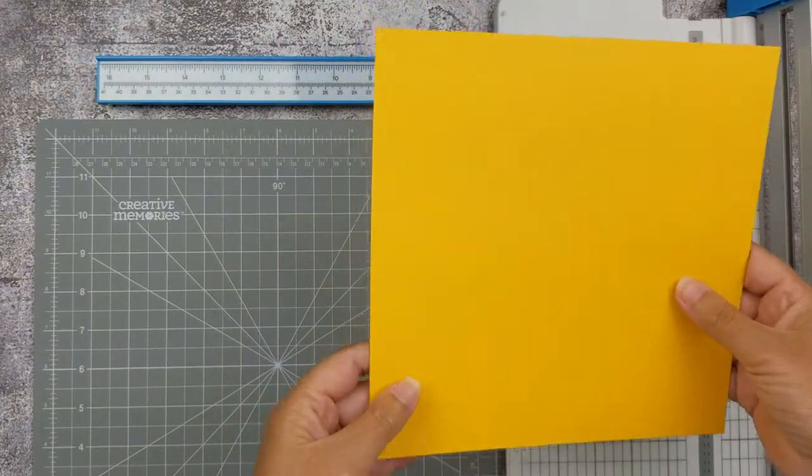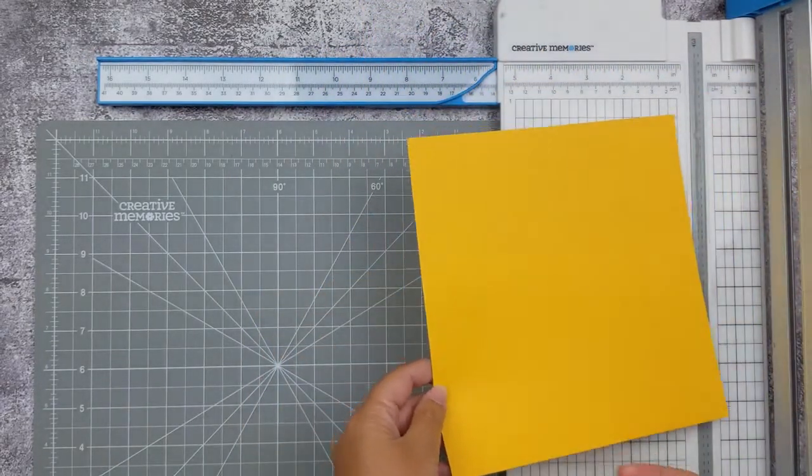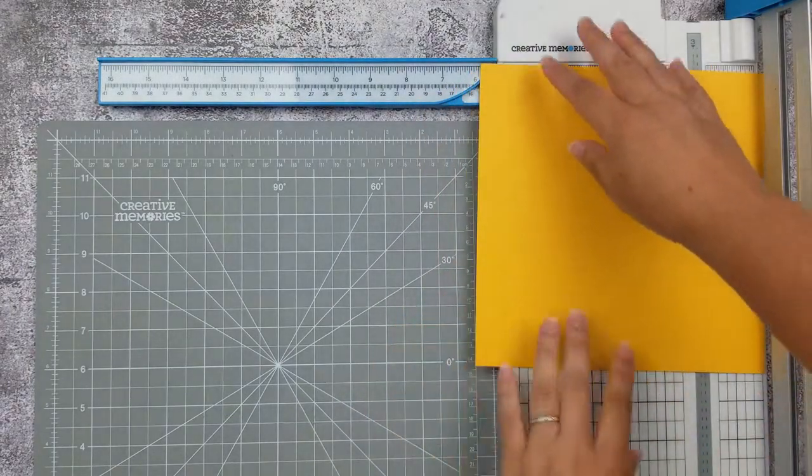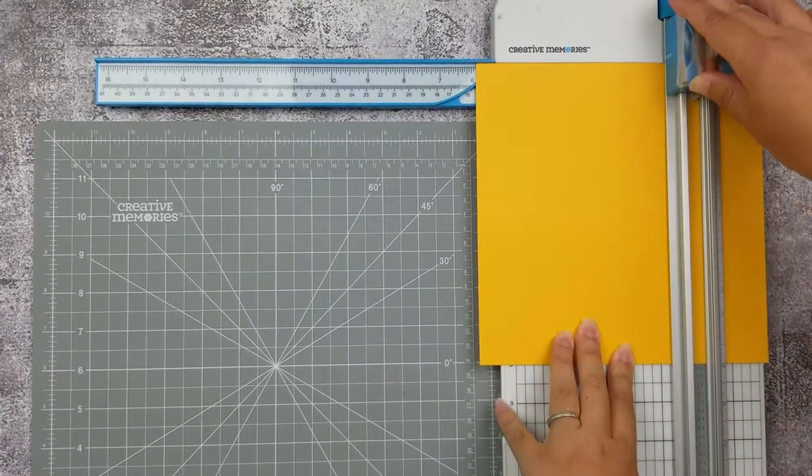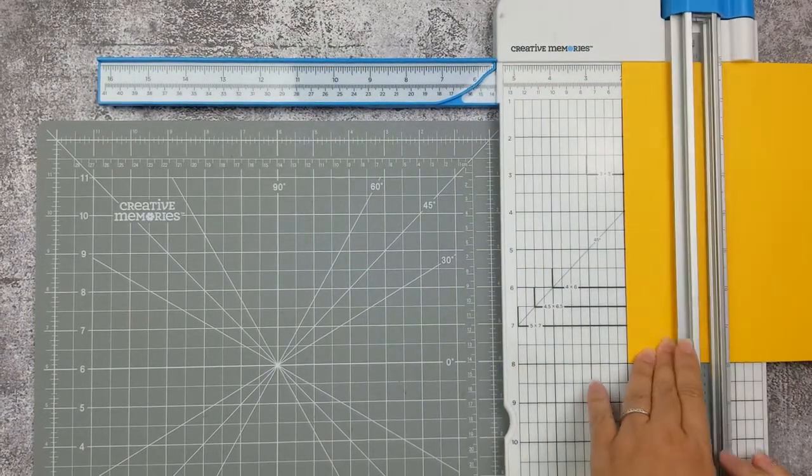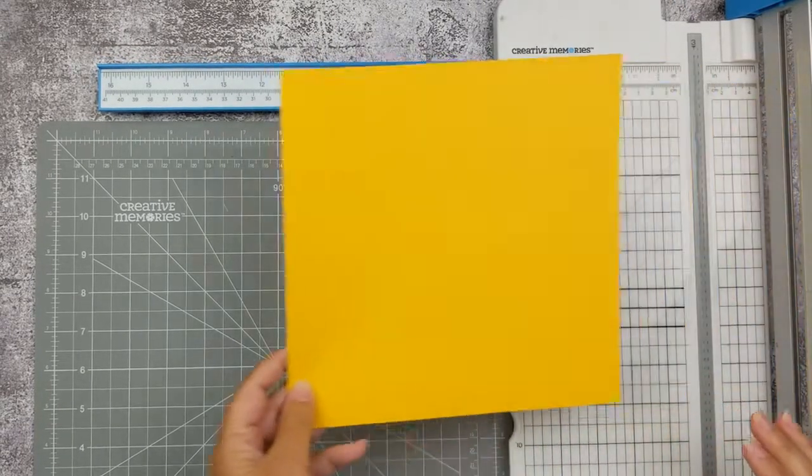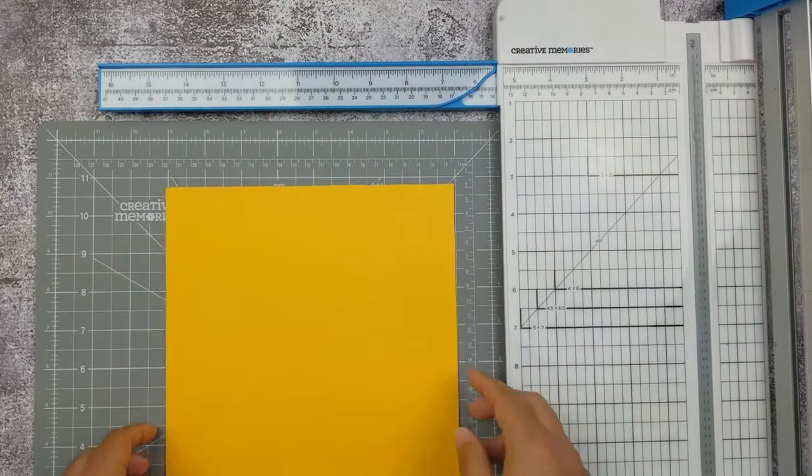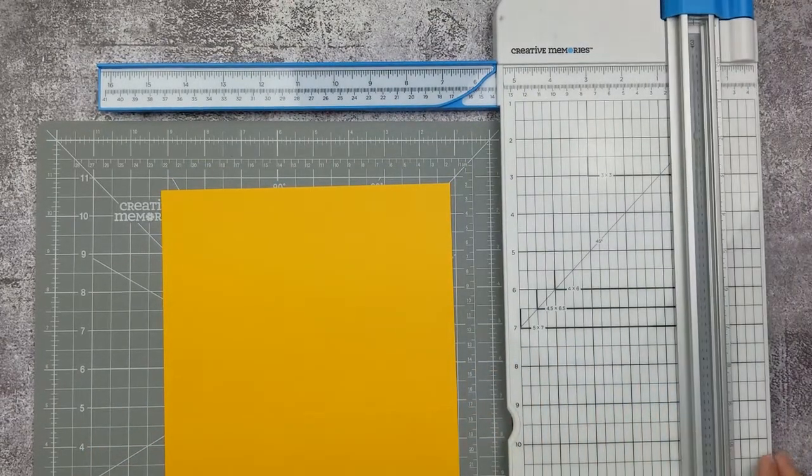Once you have your 6 and 2 inch score lines, you're going to give it a quarter turn and repeat. Again, 6 and 2 inch scores. You guys can now set your trimmer aside. You shouldn't need it for the rest of this video.